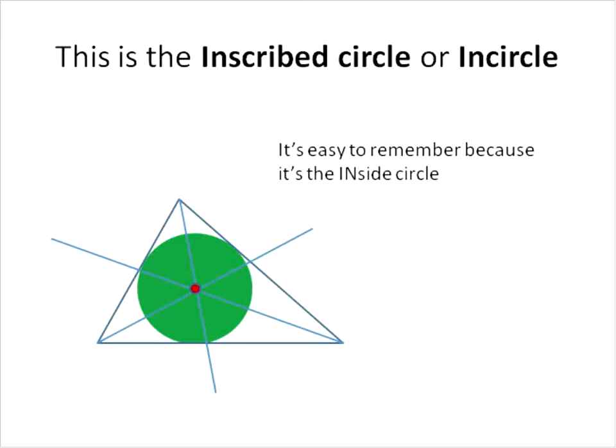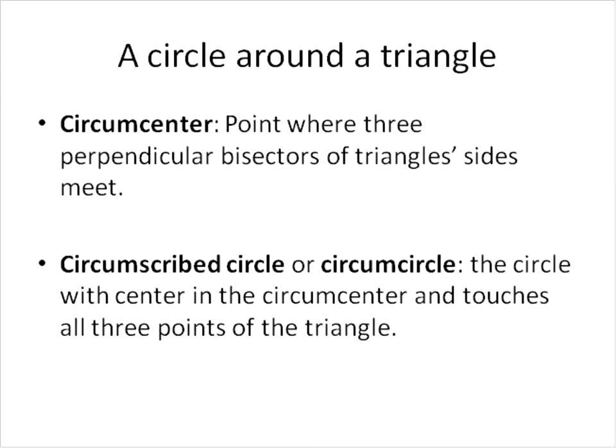Alright? So those are two types of triangle and circle relationships that we have. The other one is a circumscribed circle or a circle that goes around the outside of the triangle and touches all three points. And to draw a circumscribed circle or circumcircle, we need to find the circumcenter.